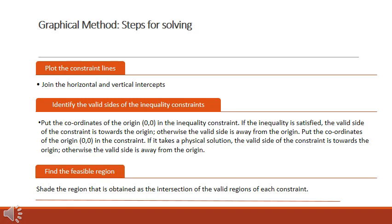The second step is to identify which side of the straight line is valid as a constraint. A very useful method is to put the coordinates of the origin, that is (0, 0), in the linear inequality constraint. If the inequality is satisfied, then the valid side of the constraint is towards the origin. But if it is not satisfied, then the valid side is away from the origin.